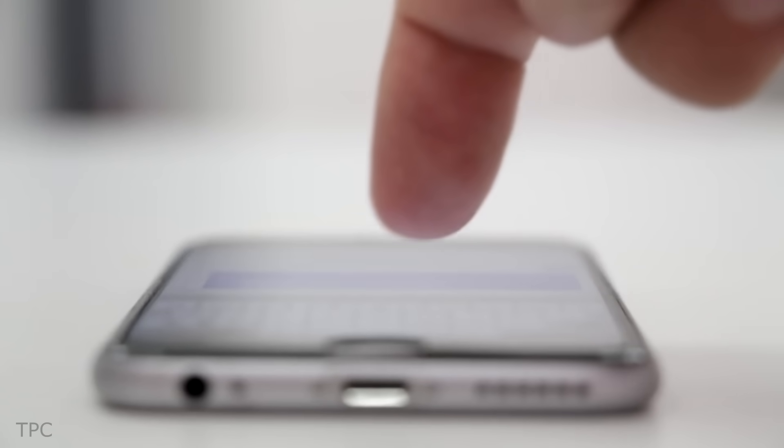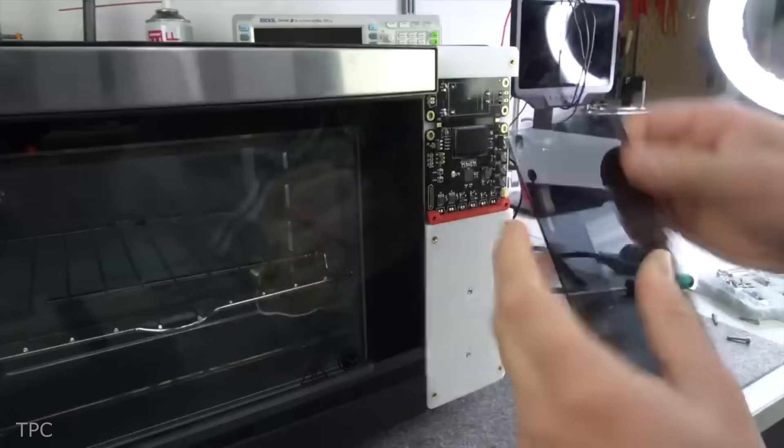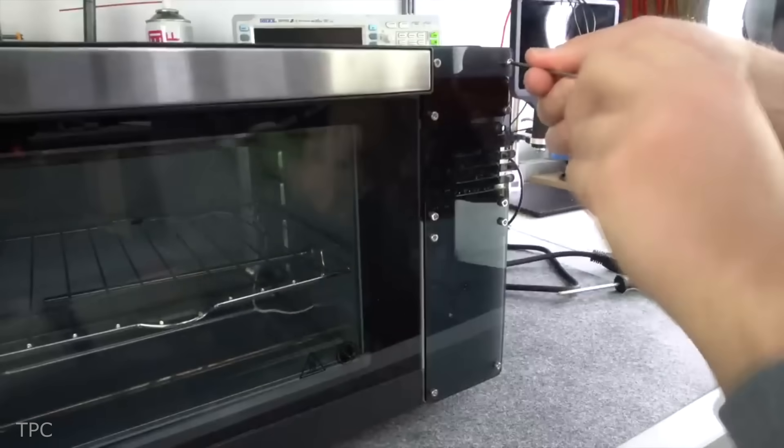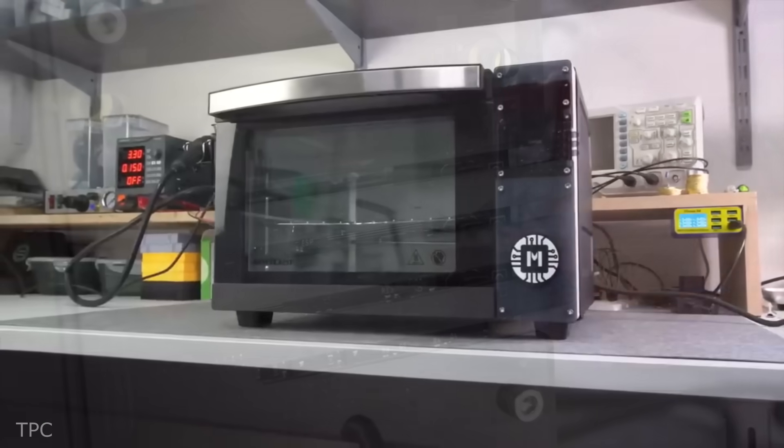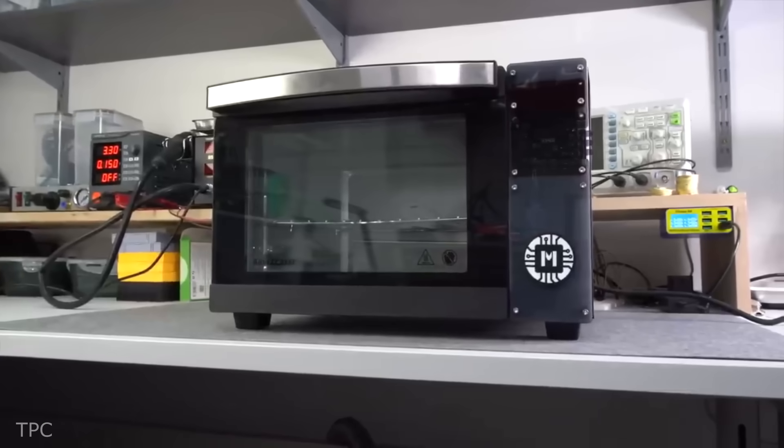It can also be programmed to work seamlessly with apps on a smartphone. For a finishing touch, he added an acrylic glass cover over the control board, offering both protection and a sleek, modern look that elevates the oven's design. Number 19.